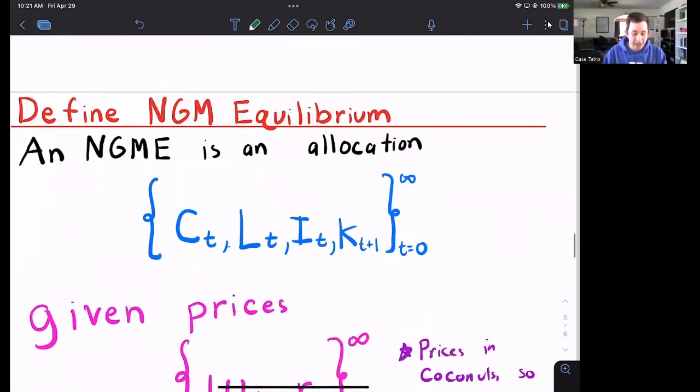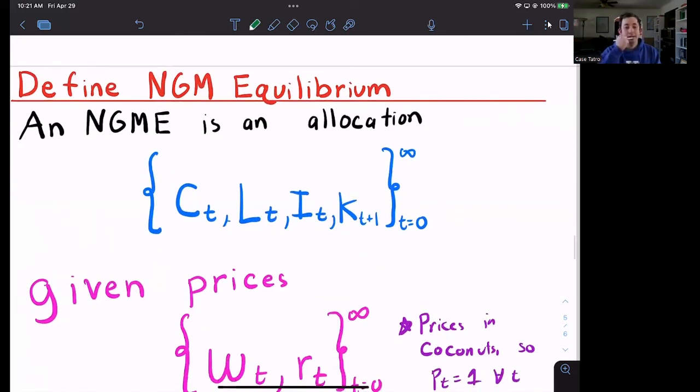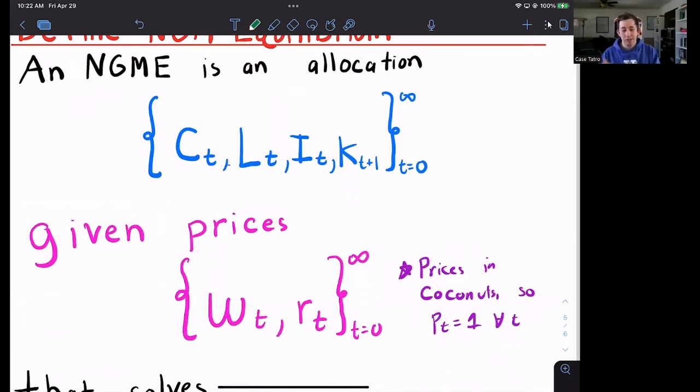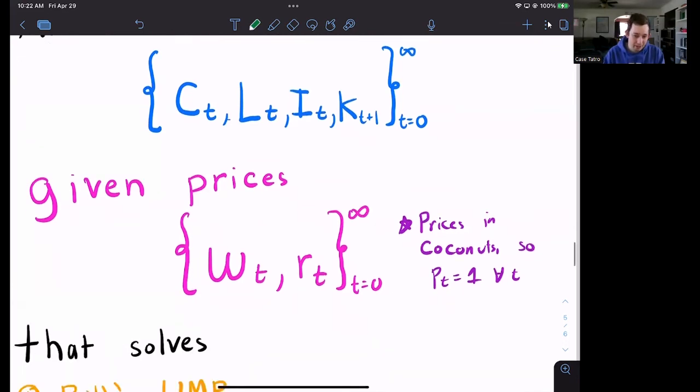Let's go ahead now and define a neoclassical growth model equilibrium. It's an allocation. What does Bill get to pick? He gets to pick his consumption. He gets to pick his labor that he gives to the firm, how much of his time he works. He picks his investment today and he also picks his capital tomorrow. What are the prices in this economy? It's just the wage and the real interest rate. Notice that everything's real. Prices are all in coconuts. The real wage and the real rental rate is number of coconuts. There are no prices. There is no money in this economy.